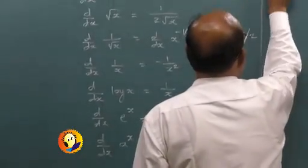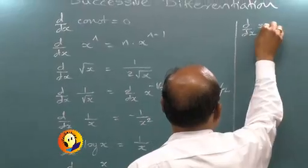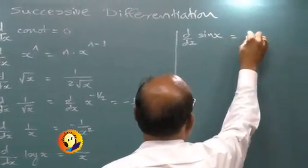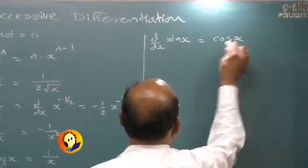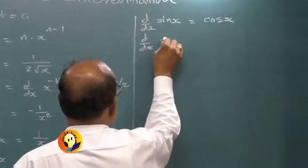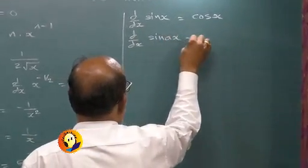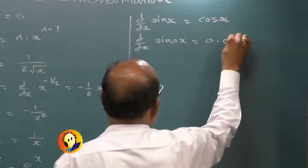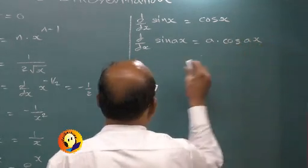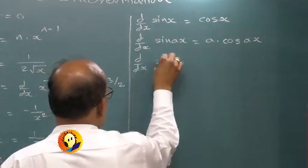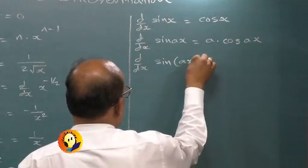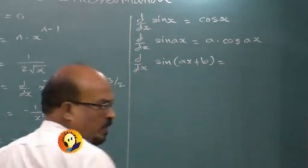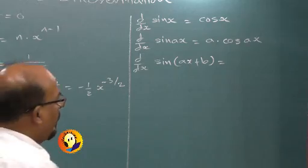Then we have d by dx of sin x is cos x. d by dx of sin(ax) is a into cos x. d by dx of sin(ax + b) — sin's derivative is cos(ax + b) into the derivative of ax + b, so it is a cos(ax + b).